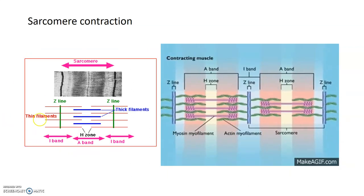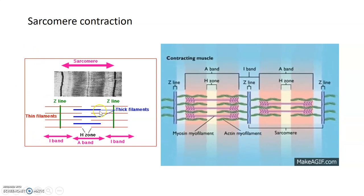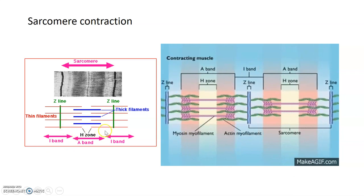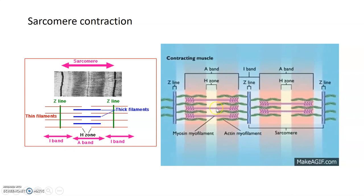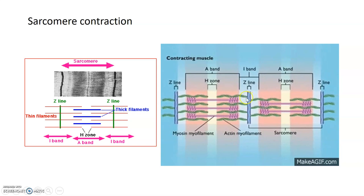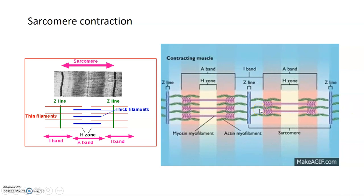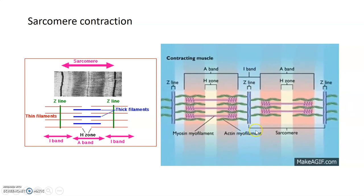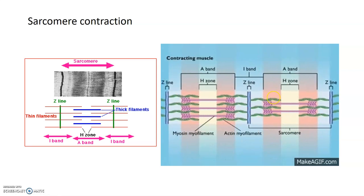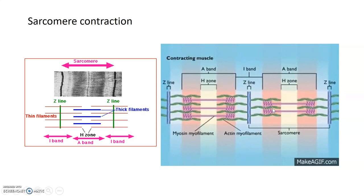You can visualize this here: two Z-lines demarcate the ends of the sarcomere, with the thick myosin filaments in the center and the thin filaments of actin in red. As you can see in the GIF, myosin heads are pulling the actin towards the center of the sarcomere, and these Z-lines on the outside are getting closer to the center — the sarcomere is shortening. When the muscle relaxes, it extends back out. All sarcomeres shorten together, leading to muscle contraction.